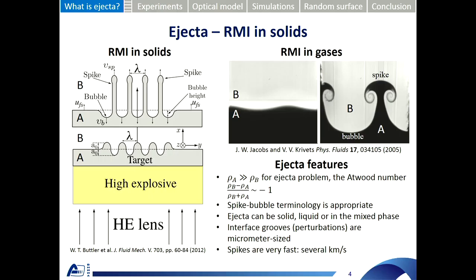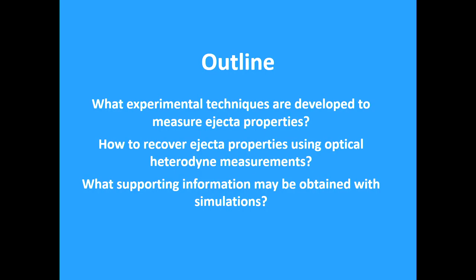Another special case for the Richtmyer-Meshkov instability in ejecta is that the interface grooves are micrometer-sized, and these spikes move very fast — with velocities of several kilometers per second. In this talk I would like to answer several questions: what experimental techniques are developed to measure ejecta properties, how to recover ejecta properties using optical measurements, and what supporting information may be obtained with simulation.